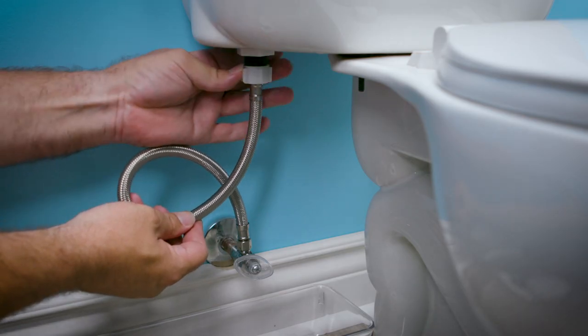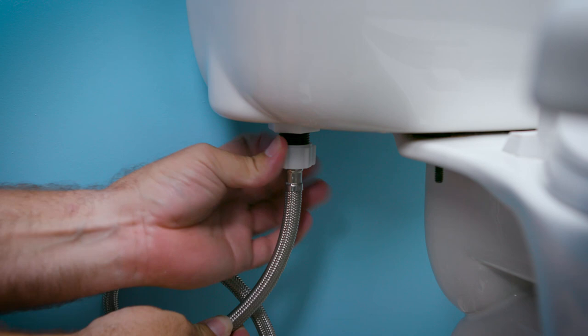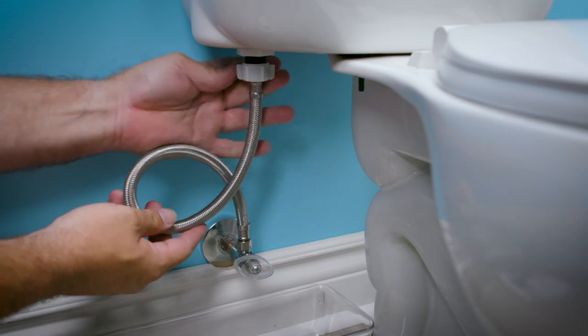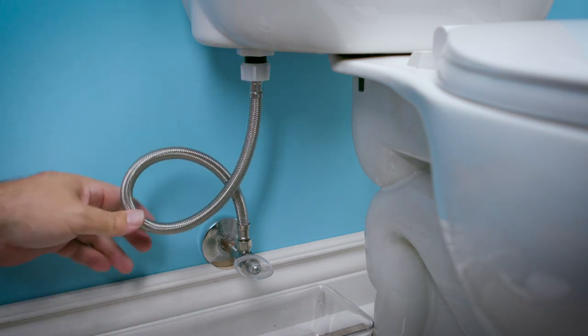Next, hand thread the outlet of the connector onto the toilet fixture. If your hose has a plastic wing nut, don't use a wrench for the connection. Just use your hand and tighten it until snug and don't over tighten.